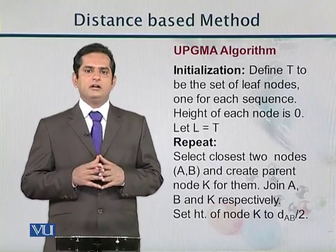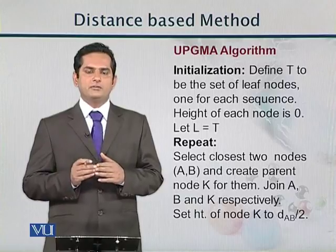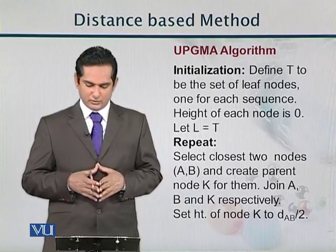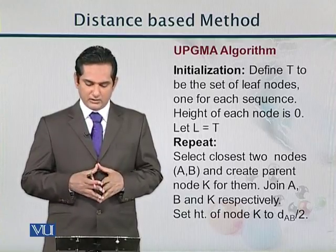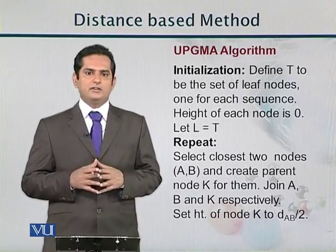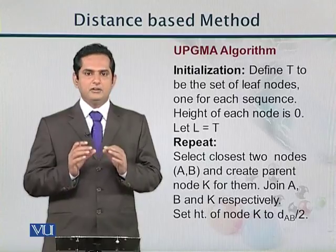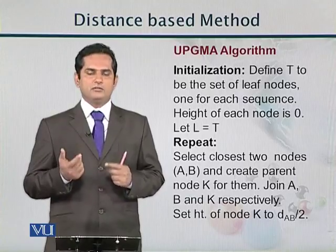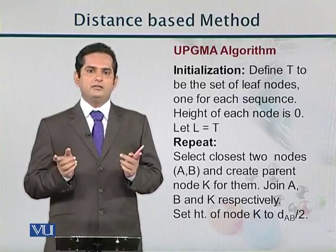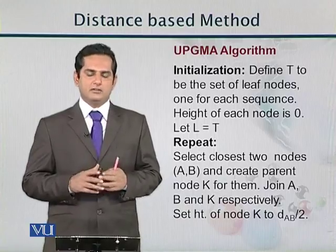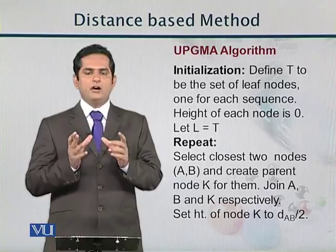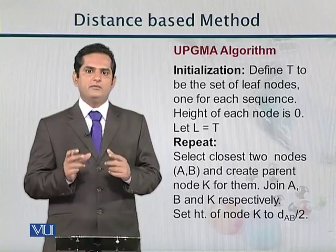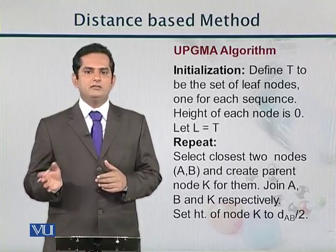So the UPGMA algorithm: we have different steps to compute UPGMA. We start from a basic set T which contains leaf nodes, one for each sequence. We give the height of each node as 0 and set L equal to T. Then we take two nodes, suppose A and B, and try to join those nodes using a distance matrix. When we join, we take half of the distance between the two nodes — for example, if the distance between two nodes is 10, we join them with 5 on the left node and 5 on the right node.